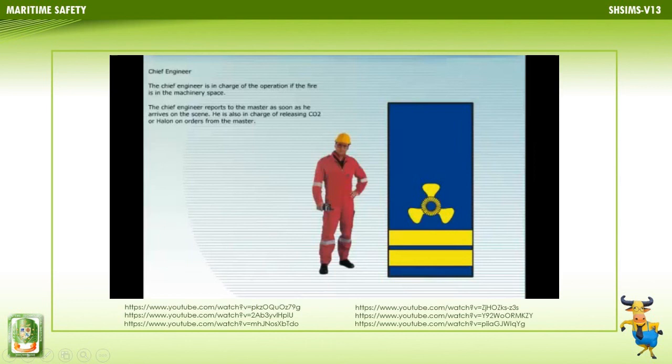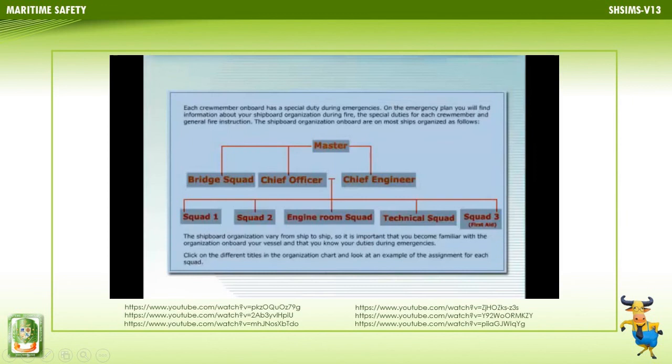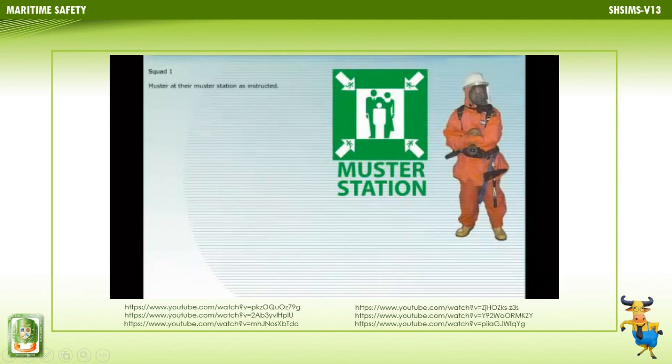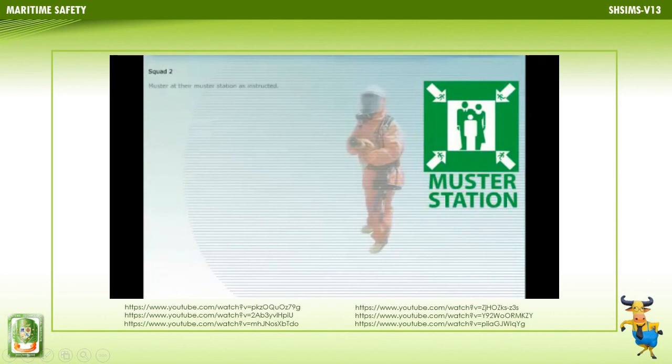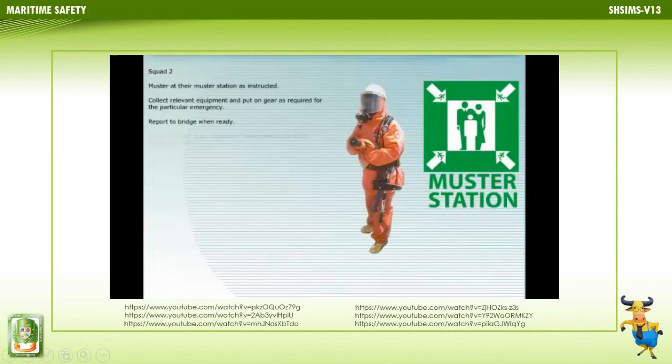The chief engineer is also in charge of releasing CO2 or halon on orders from the master. At their muster station, crew must collect relevant equipment, put on gear as required for the particular emergency, report to the bridge when ready, and when ordered, place necessary equipment close to the emergency site.